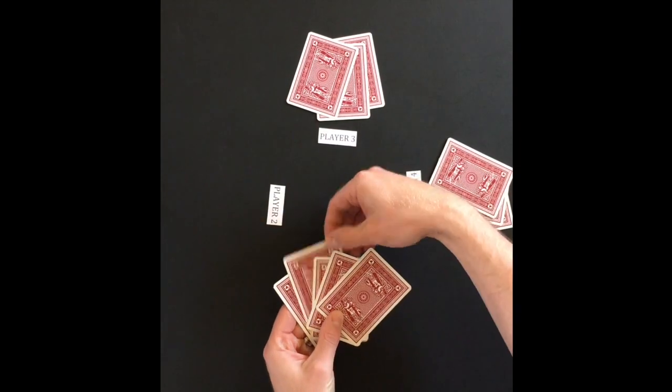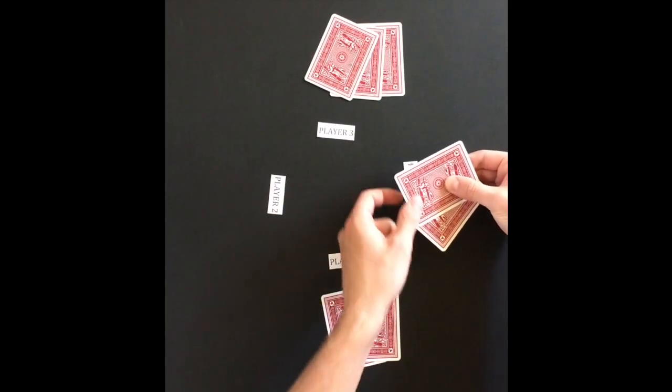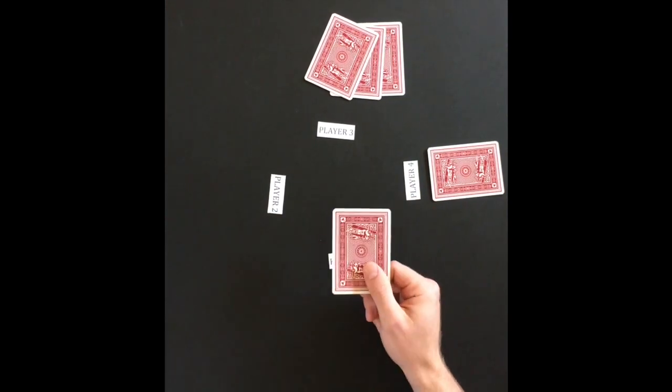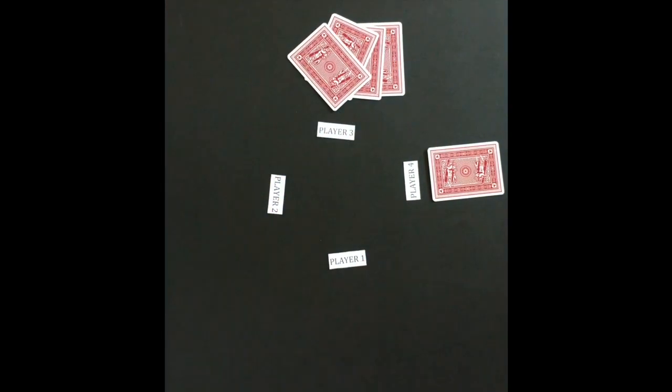Player 3 now draws a card from player 1. When player 1 pairs up his 6, he is left with only one card that player 3 will draw. Player 1 is out of the game and safe from becoming the Old Maid.